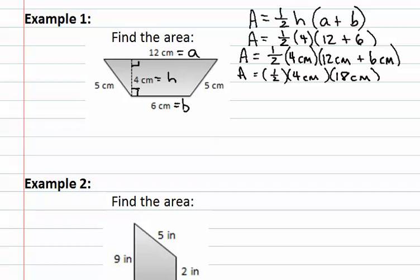I like to leave the fraction until the end, therefore I have one-half times seventy-two centimeters squared. I can now take seventy-two and divide it by two, which will result in the answer of thirty-six centimeters squared.